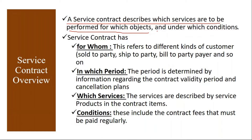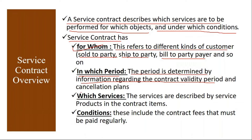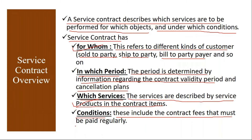A service contract describes which services are to be performed for which objects under which conditions. Normally a service contract specifies: for whom (sold-to party, ship-to party, bill-to party), in which period (determined by contract validity period and cancellation information), which services (described by service products in the contract), and conditions (contract fees that must be paid regularly).